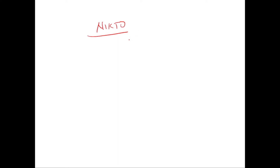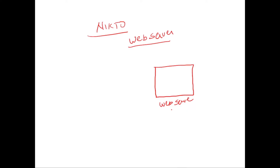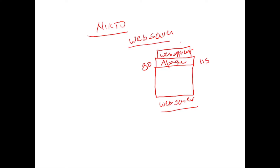What is the use of Nikto? We all know what a web server and a web application are, and the architecture behind them. You can think of a web server as any server — it can be a Windows server or a Linux server. On top of the web server we'll have a web application server like Apache, Apache Tomcat, or Internet Information Server, listening on port 80 for incoming requests. On top of that server we'll have a web application running — here I'm considering my own website, codespindle.com, running using Apache server and hosted on the web server.